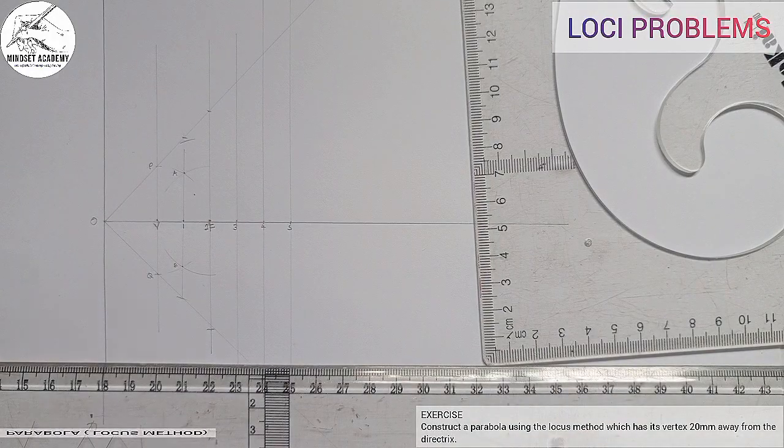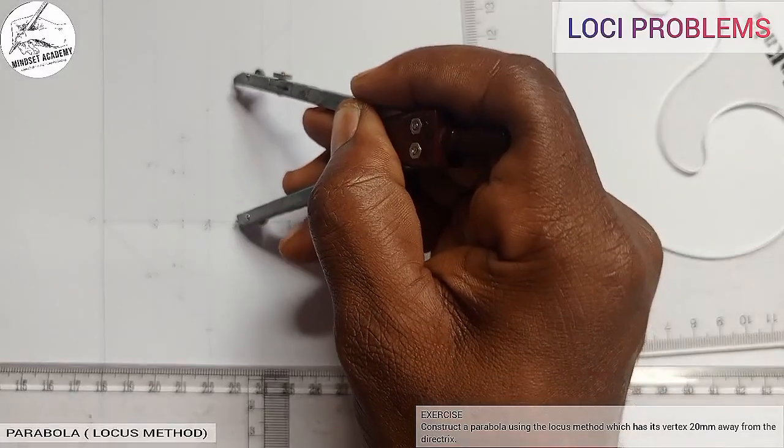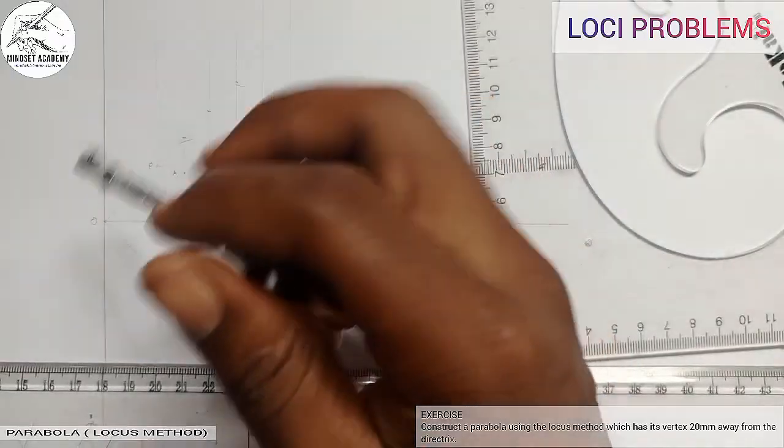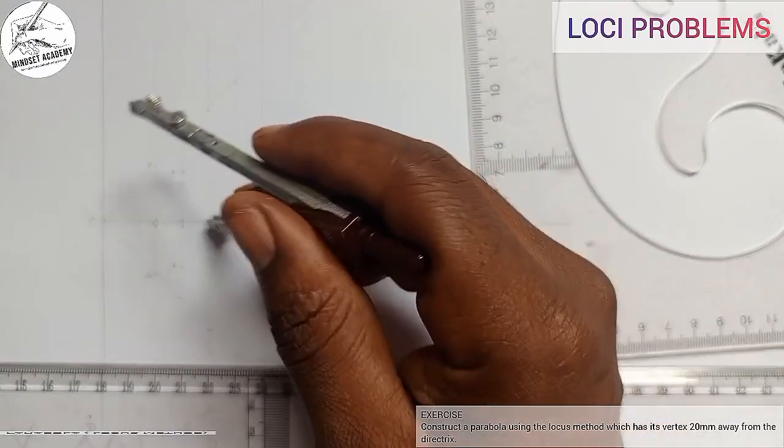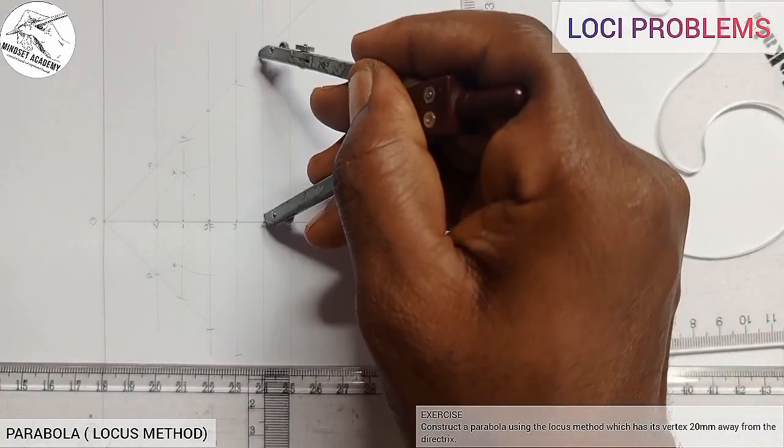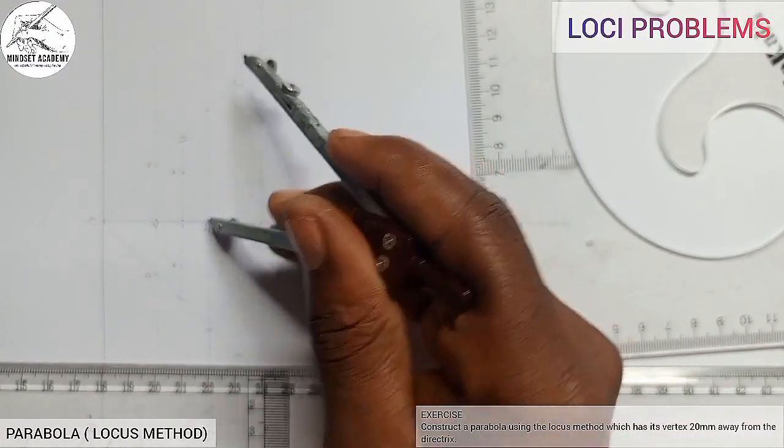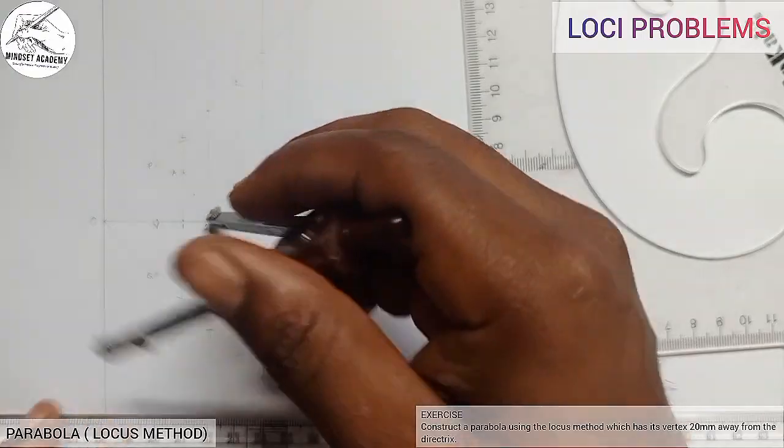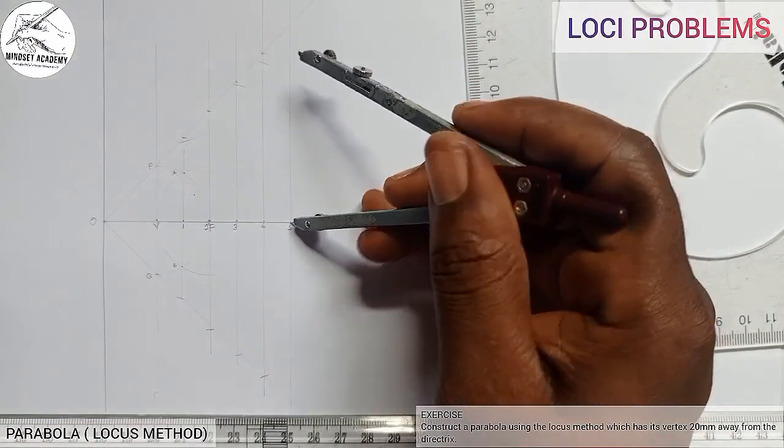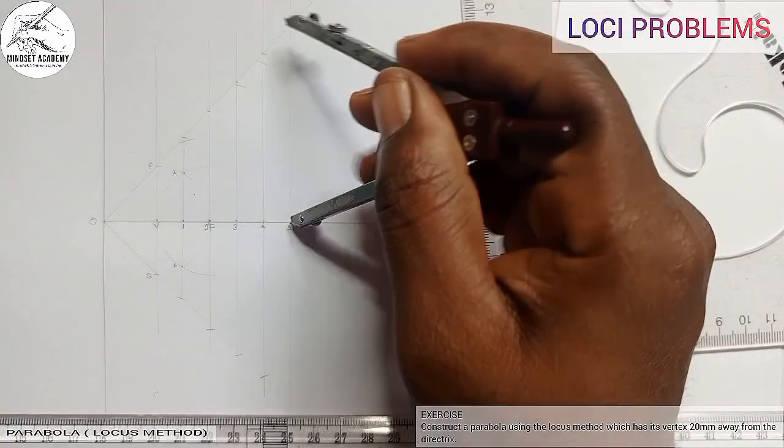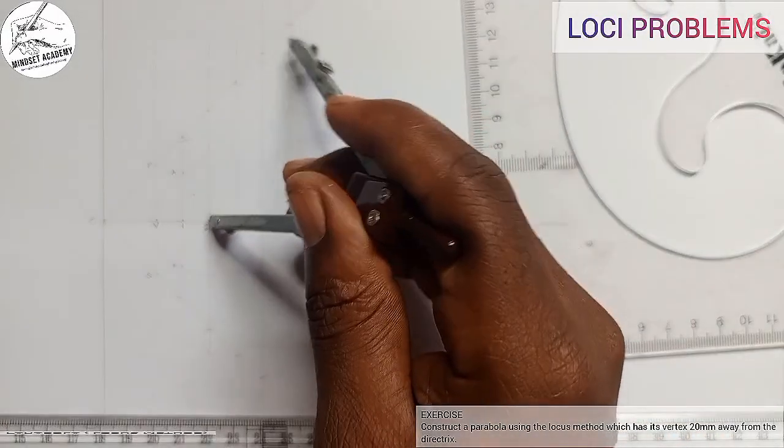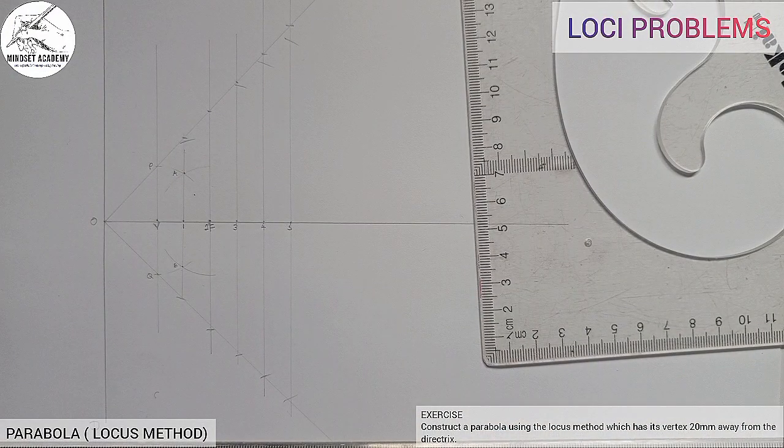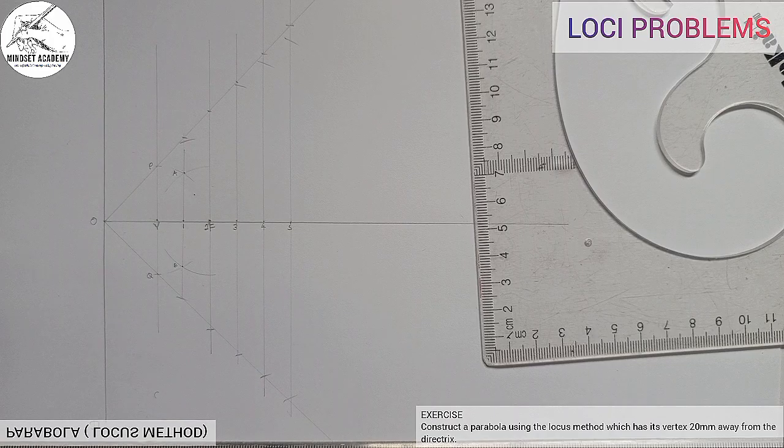Now the next one is from 3 to the top here. I place it on F, I will mark up and down. From 4 to the top here, I place it on the F, focus, I will mark up and down. So all those points will be the point through which my parabola is going to pass.